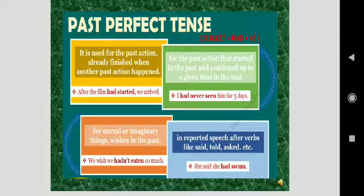For unreal or imaginary things wishes in the past. We wish we hadn't eaten so much. We wish we hadn't gone over there. We wish we had done this work in time. So any unreal or imaginary things you are having then we use past perfect tense.